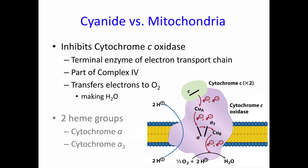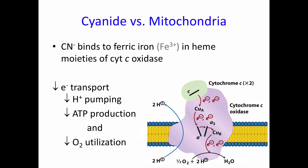Cyanide is a mitochondrial poison — it inhibits cytochrome C oxidase, part of complex 4 in the electron transport chain. Cytochrome C drops off a pair of electrons onto cytochrome C oxidase; they flow through the enzyme landing first on one copper atom, then to cytochrome A (a cofactor containing a heme group), then cytochrome A3 (which also contains heme), then to a second copper atom, and finally combining with molecular oxygen and some hydrogen ions to form water. When cyanide inhibits mitochondria, it does so by binding to ferric iron (Fe3+) in the heme moieties of cytochrome C oxidase. That shuts down electron transport — the whole electron transport chain stops, hydrogen ion pumping stops, and the hydrogen ion electrochemical gradient rapidly disperses as the mitochondria makes its last few ATP molecules.